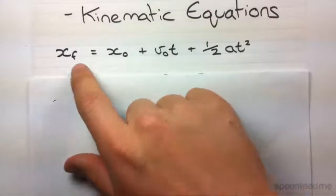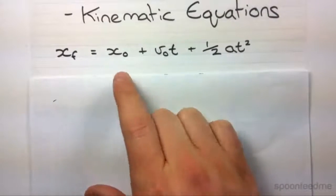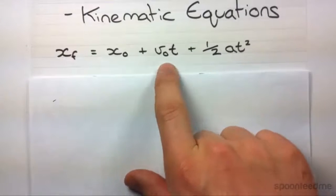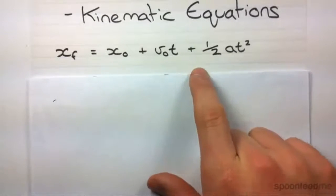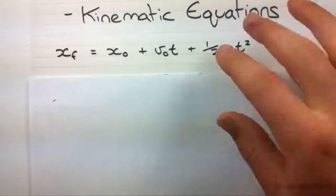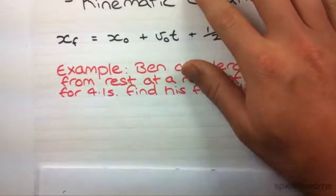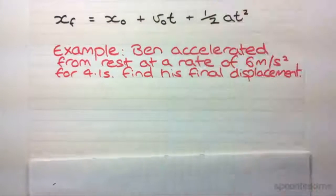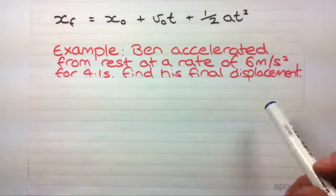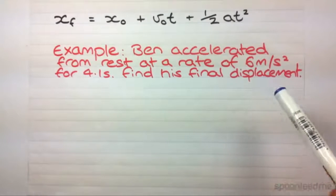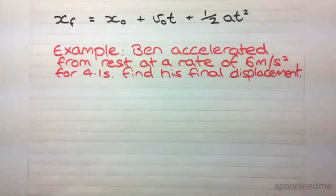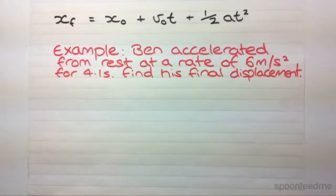The first equation we're going to look at is this one. Final displacement equals initial displacement plus initial velocity times time plus half times acceleration times time squared. Got an example here. Start off really simple. Ben accelerated from rest at a rate of 6 metres per second squared for 4.1 seconds. Find his final displacement.